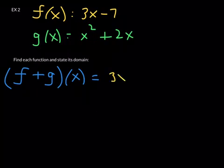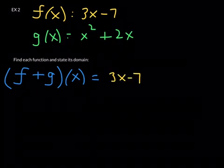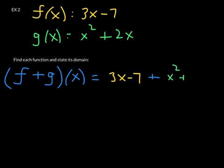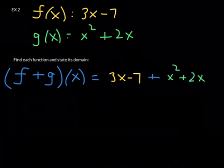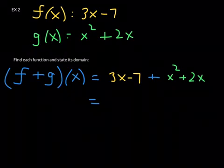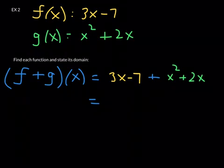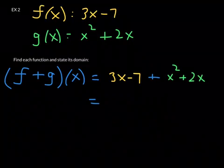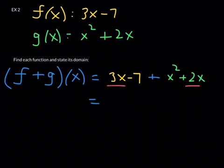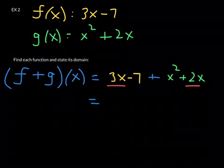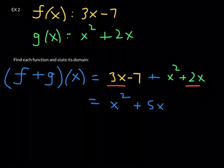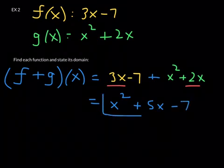When I take f — 3x minus 7 — and I add that to x squared plus 2x, it basically looks like I'm adding two algebraic expressions together, and that's really what it boils down to. You can only add like terms. I'm going to underline the like terms — 3x and 2x are your only like terms, so those are the only two terms you can combine. The sum function would be x squared plus 5x.